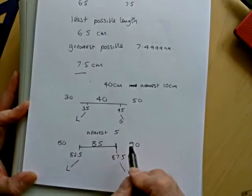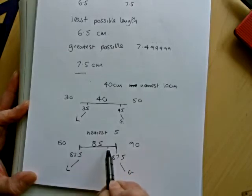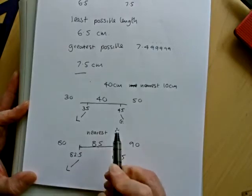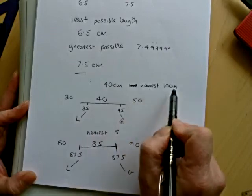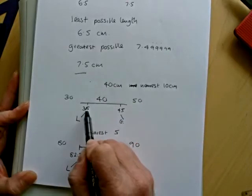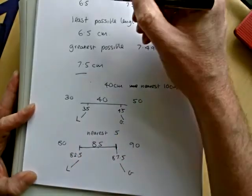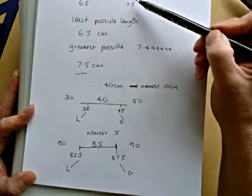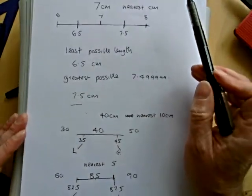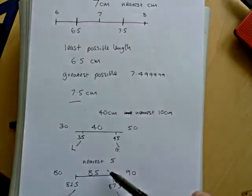This often confuses people. There's an interesting note that the length of the interval is 5 for the nearest 5. The length of the interval for the nearest 10 between 35 and 45 is 10. And the length of the interval for 1 centimeter between 6.5 and 7.5 is 1. So it kind of makes sense.